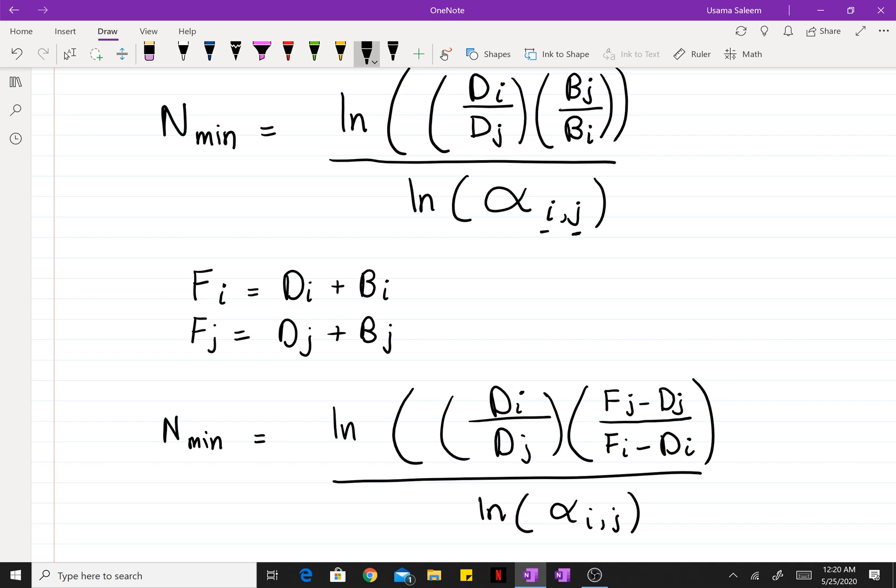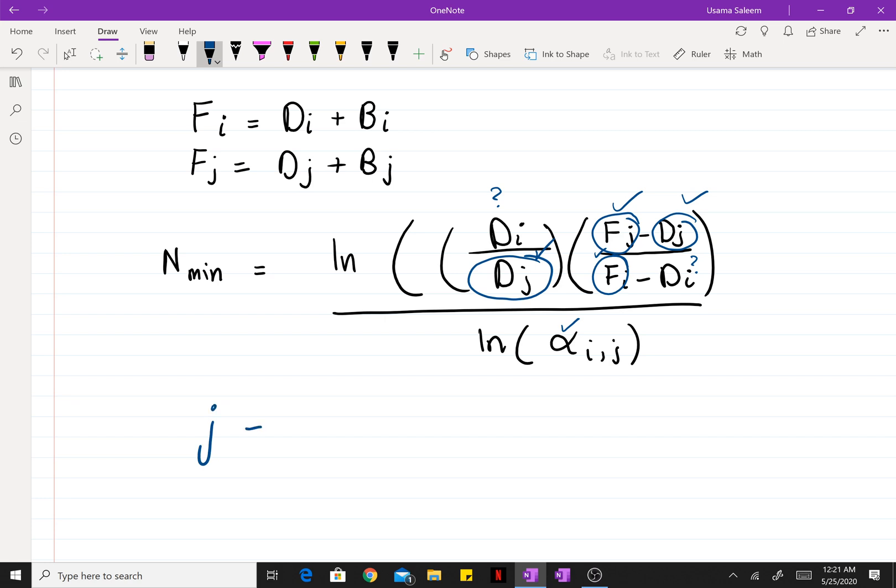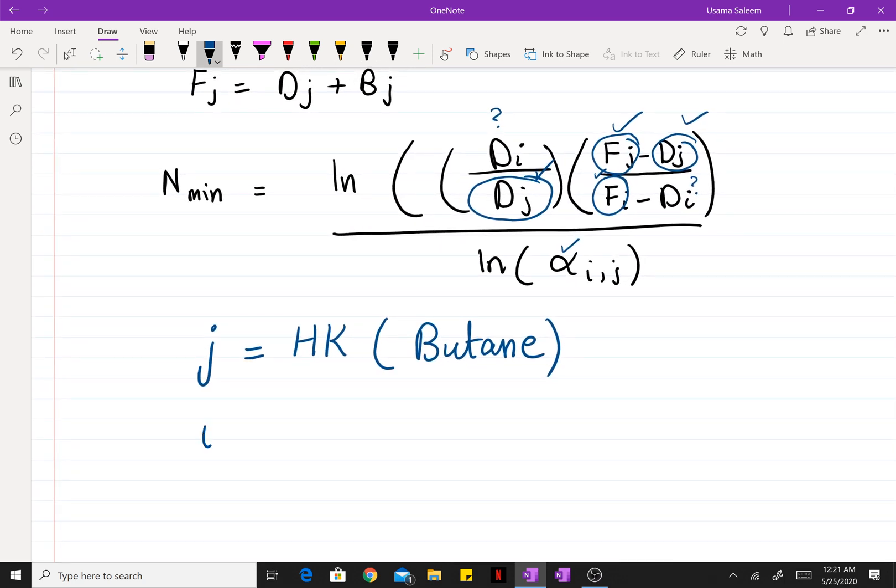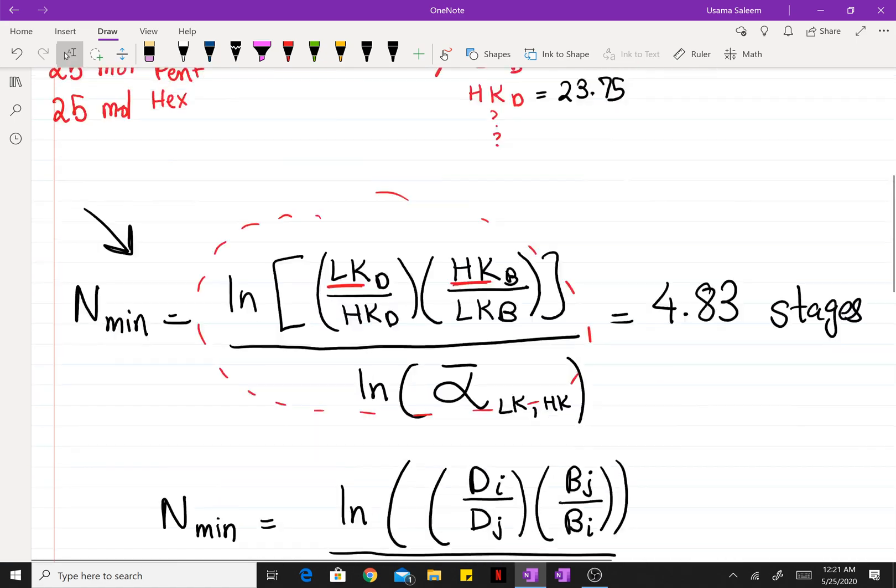So now if you know the flow rate of one species, let's say if you know the flow rate of J in the distillate, and we already know the feed composition and we know the relative volatility, we can find the flow rate of species I in the distillate. So let's assume that J is equal to the heavy key, which was butane in our case. And let's try to find the composition of pentane.